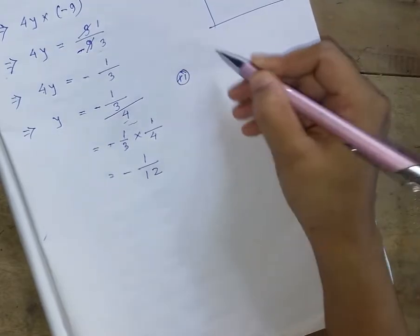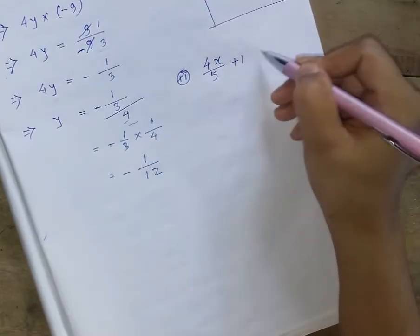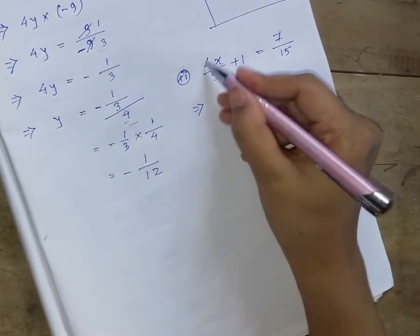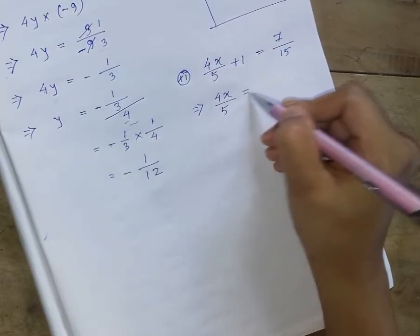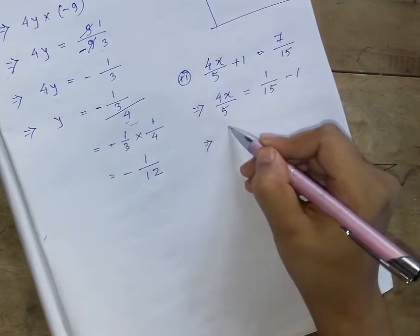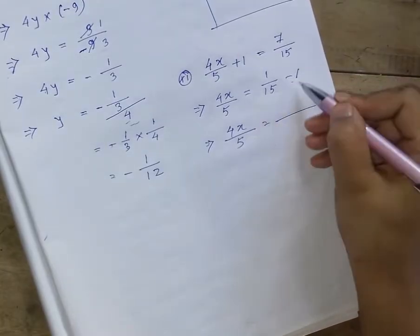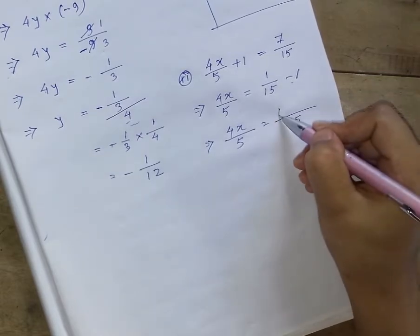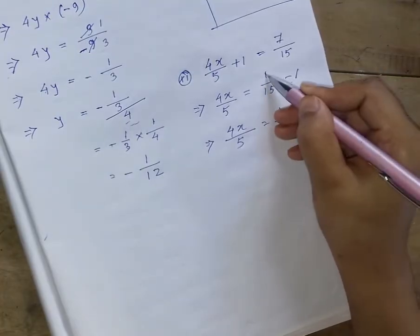4x divided by 5 plus 1 equals 7 by 15. We have x to get x. So 4, 5 minus 6, so 4 equals 4x to 5. Then we have 4x to 5. 2 times 3 is a small amount plus. Take away that: 15 times 3.